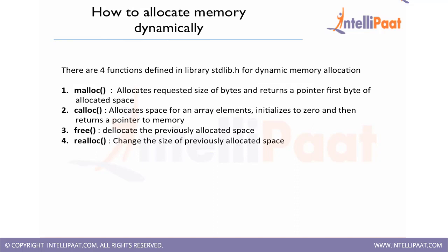So how to allocate the memory dynamically? In C we have a library function stdlib.h. In stdlib.h we have four functions that do dynamic memory allocation. The first function is malloc, which allocates a requested size of bytes and returns a pointer to the first byte allocated. Calloc allocates space for array elements, initializes them to zero, and returns a pointer to memory. Free, as the name suggests, will free the space we have allocated. Realloc is used to reallocate the memory space.